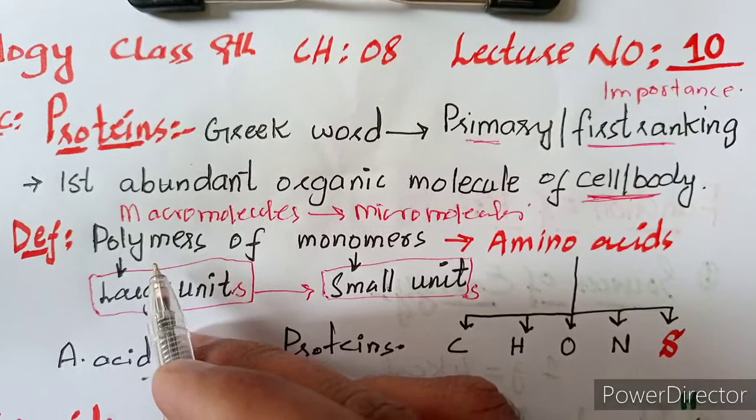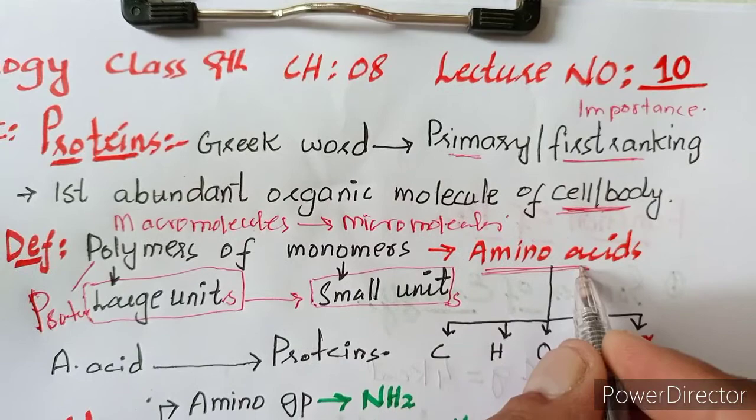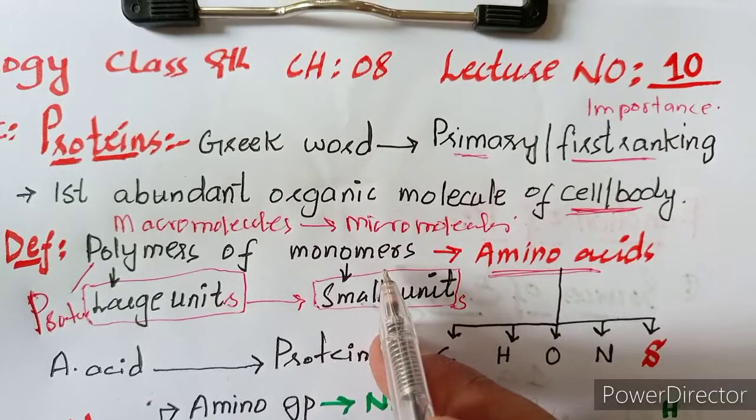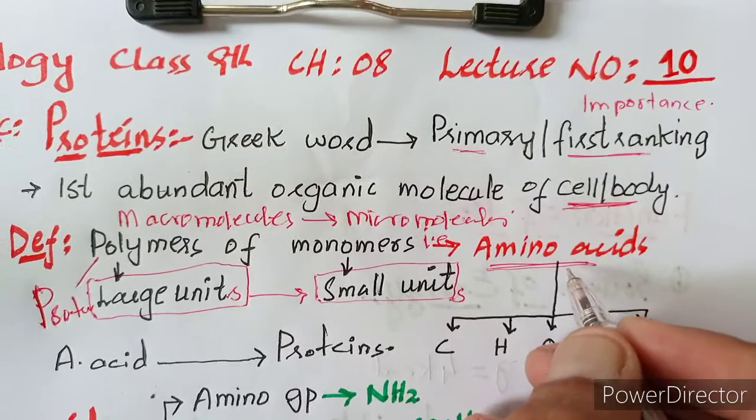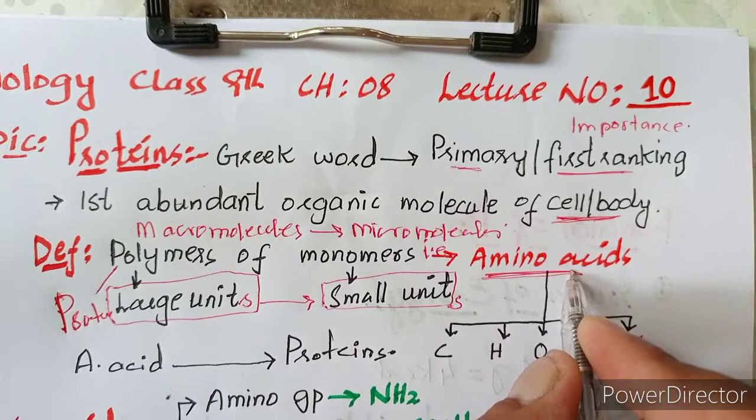The monomers of proteins are amino acids. Proteins are the polymers of monomers called amino acids. Proteins are macromolecules composed of small units called amino acids.